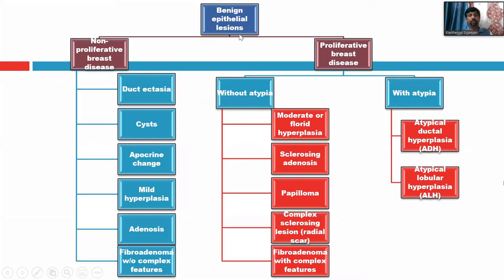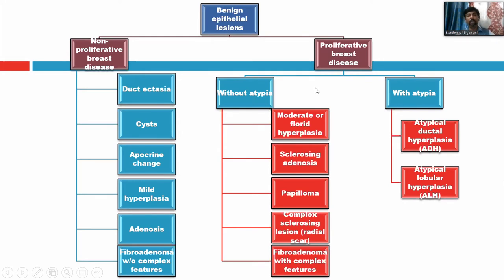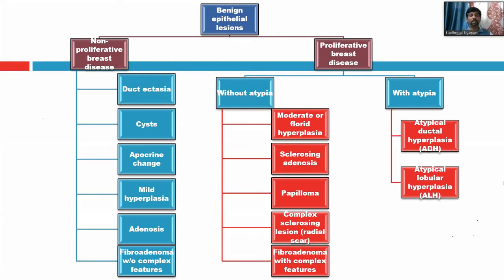Coming to benign epithelial lesions. They can be classified into non-proliferative breast disease and proliferative breast disease. Non-proliferative includes duct ectasia, apocrine change, mild hyperplasia, adenosis, and fibroadenoma without complex features. Proliferative breast disease is divided into with and without atypia. With atypia includes atypical ductal hyperplasia and atypical lobular hyperplasia. Without atypia includes moderate to florid hyperplasia, sclerosing adenosis, papilloma, complex sclerosing lesion, radial scar, and fibroadenoma with complex features.